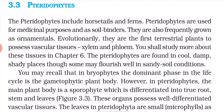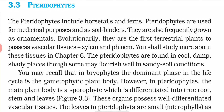Pteridophytes are found in cool, damp, shady places, though some flourish well in sandy soil conditions. As we learned previously, in bryophytes the gametophyte plant body is the dominant phase, but in pteridophytes the dominant plant body is the sporophyte. This sporophyte has well-differentiated vascular tissue and also has true leaves, stem, and roots — unlike bryophytes, which do not have true leaf, stem, and roots.